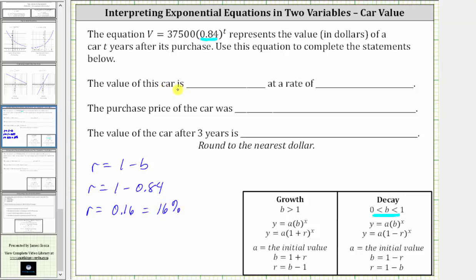So now we know the value of this car is decreasing at a rate of 16% per unit of time, and because t is time in years, the rate of decrease is 16% per year.